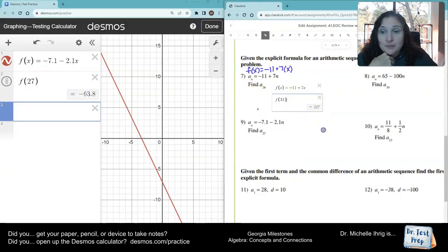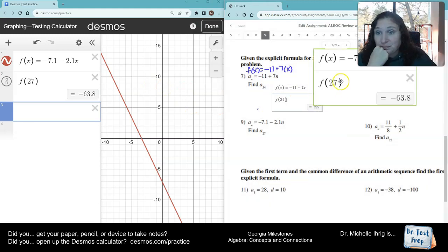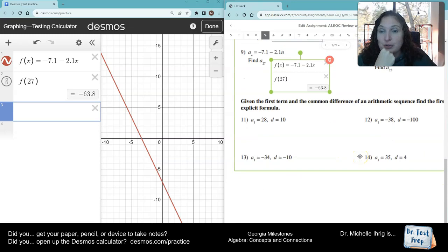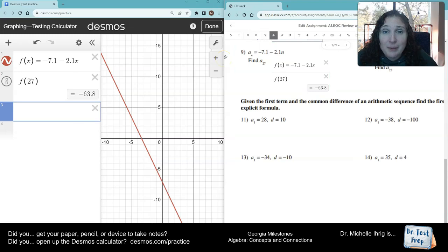Anytime you need the missing value, all you do is just turn the A sub n into an F of x. And then on the next line, whatever number you need, you plug that in. So I'll leave those other two for you to do. Here, it wants you to write the formula. Remember, you know how to do this already. You just copy it from the formula sheet. And instead of writing A sub 1, we erase it, and we write whatever the first number is, 28. Instead of writing the letter D, we erase it, and we write the difference. Done. That's it.